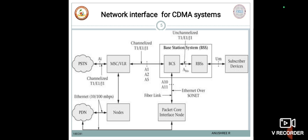When we look into the network interfaces for the CDMA system, we have the PDNs, the nodes, the MSC, the VLR for CDMA communication, the BSS systems, the packet core interface node, and the subscriber devices. We have studied about the PSTN and the function of the PSTN with respect to the MSC, as well as the function of the PDN, all covered in the previous slides.